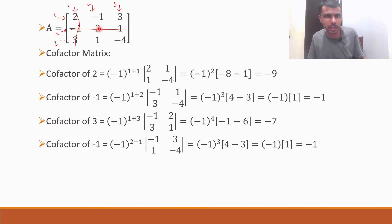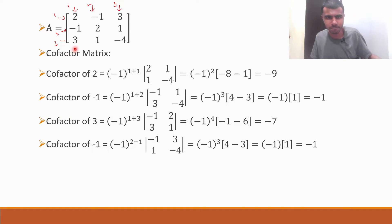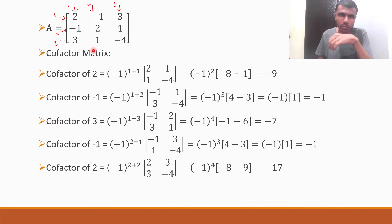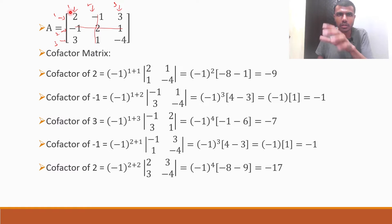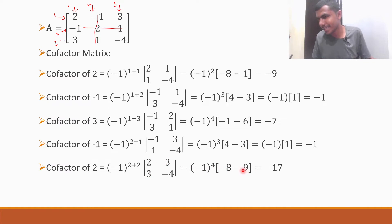Now I need to find out the cofactor of 2. 2's position is row 2, column 2 — so 2,2. Minus 1 to the power 2 plus 2 into: track off the row and column in which 2 is there, giving the determinant of 2, 3, 3, minus 4. That gives minus 8 minus 9, and minus 1 to the power 4 you can ignore it. Minus 8 minus 9 is minus 17.